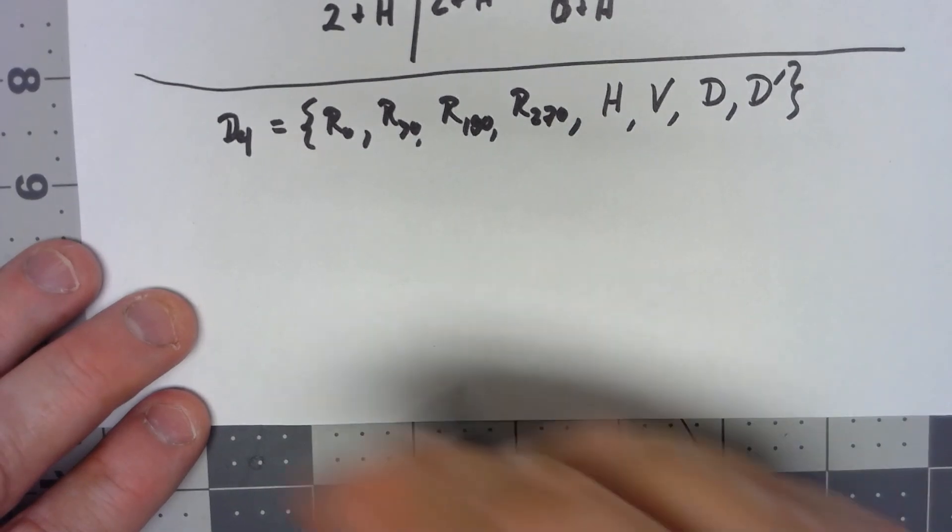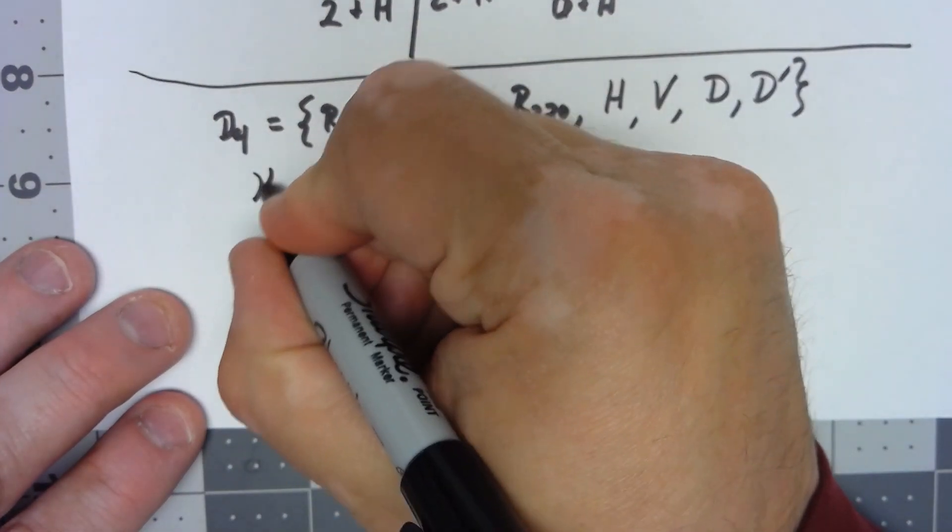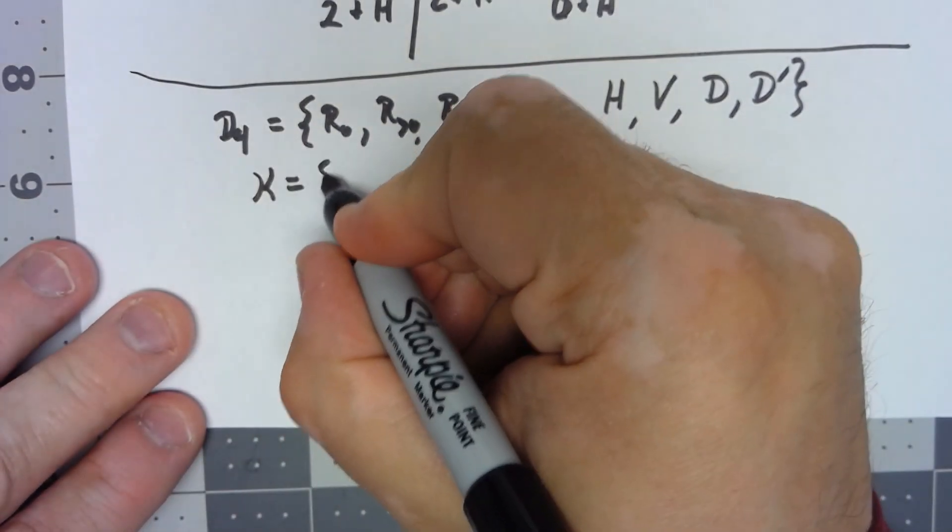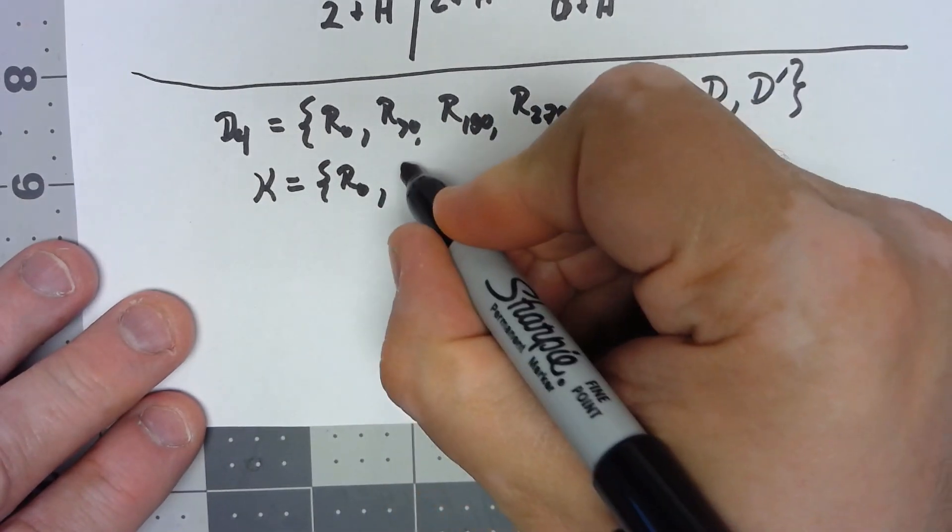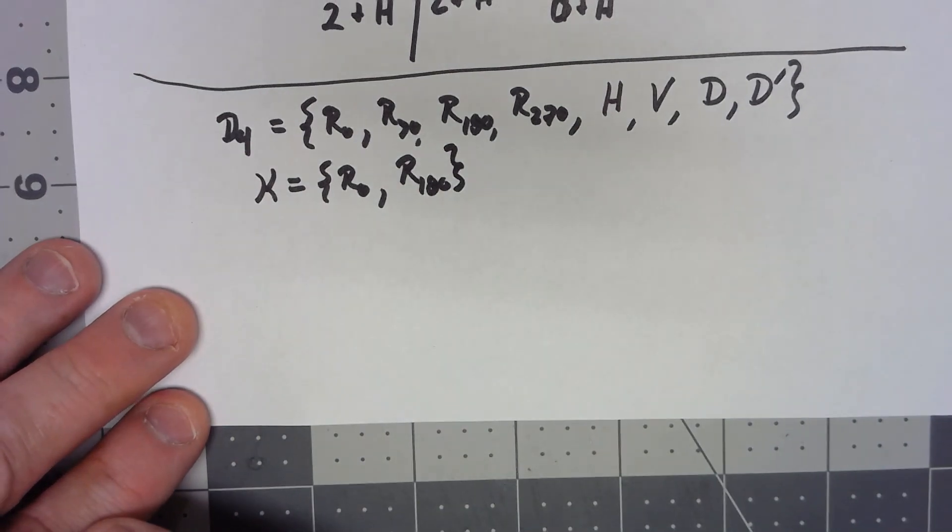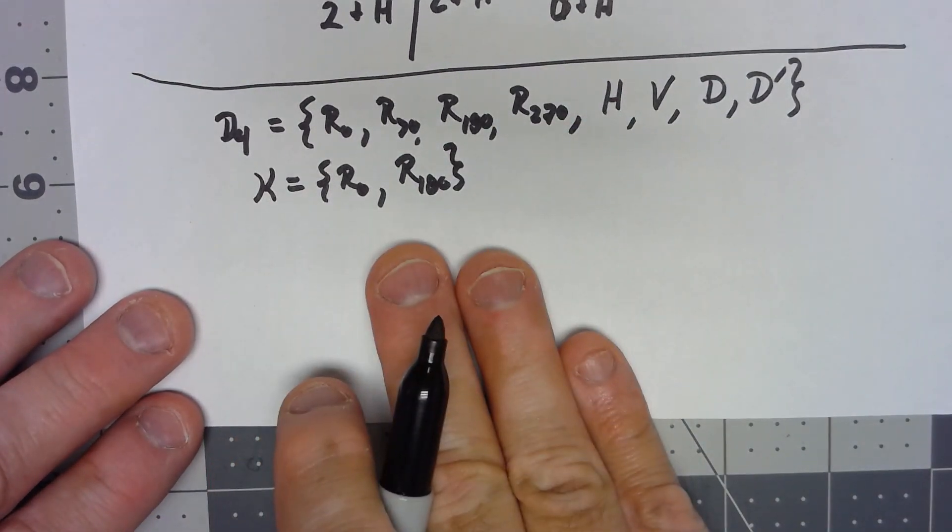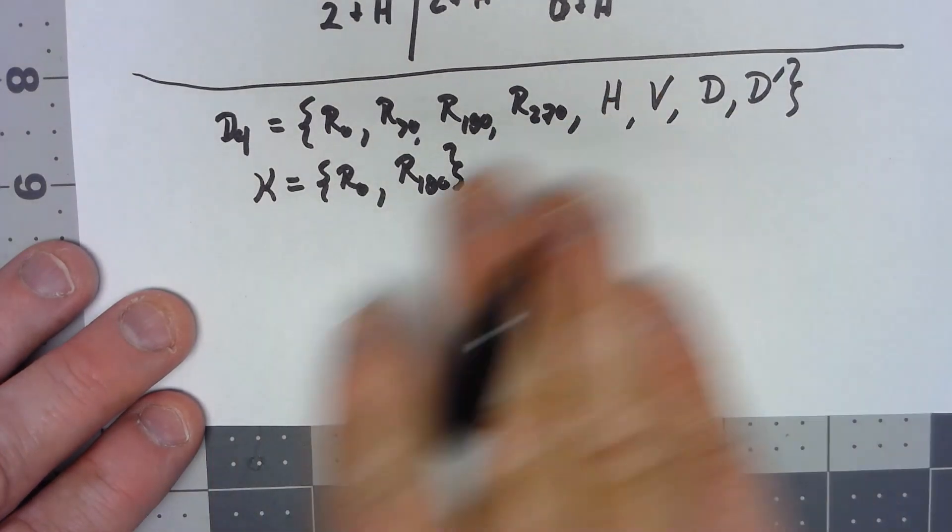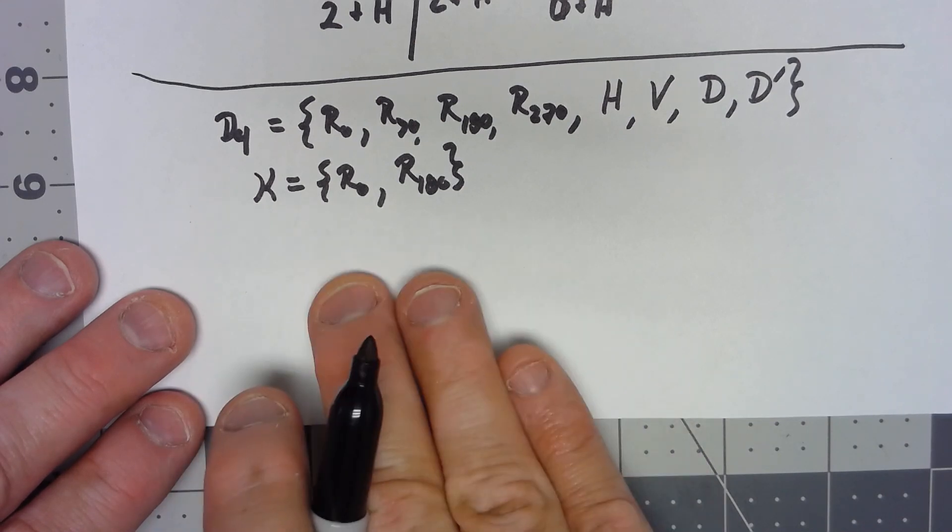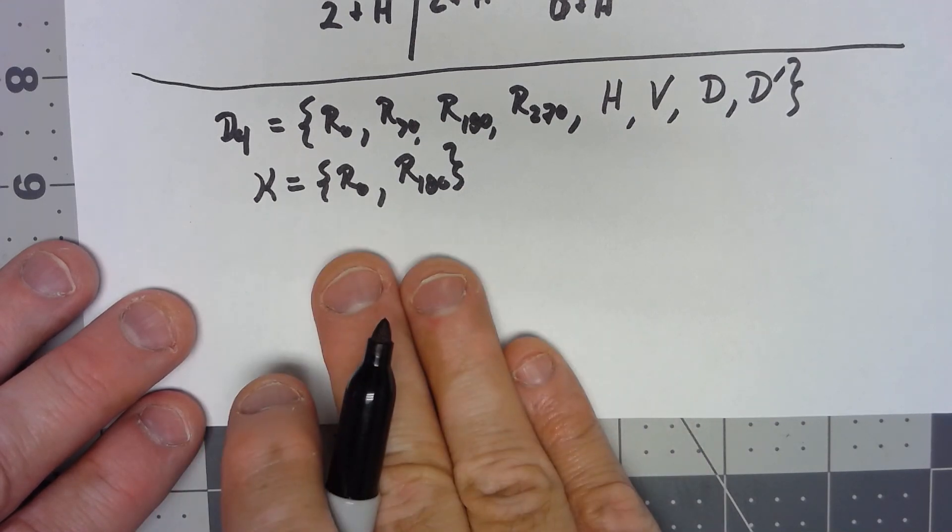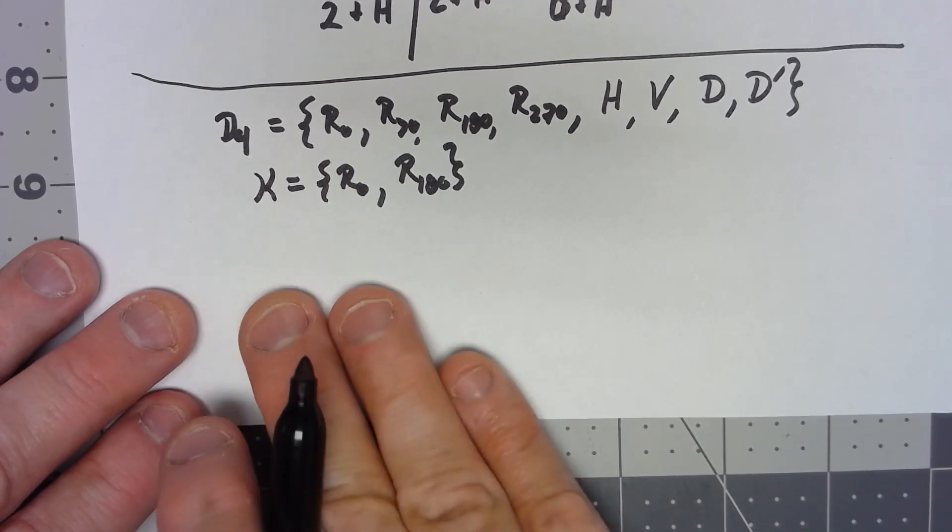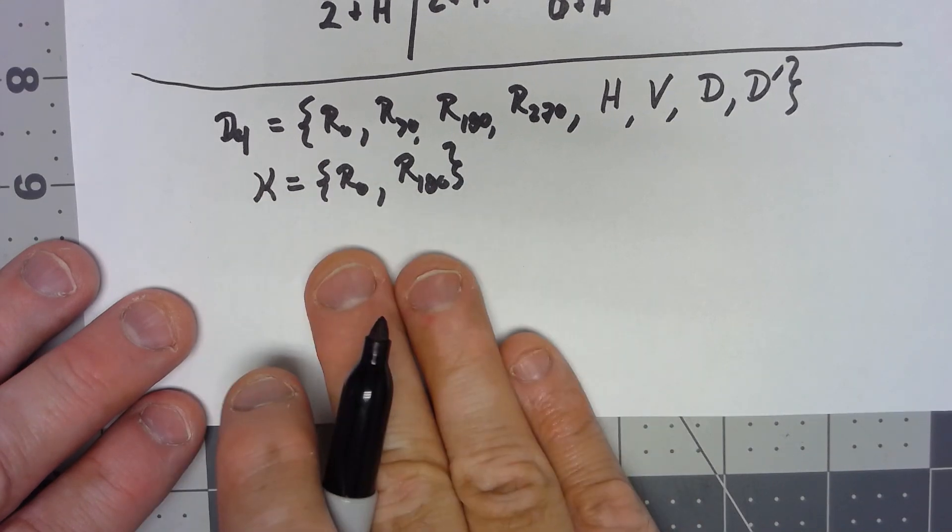I want to look at a subgroup, we'll call it K, and K will be the subgroup consisting of, it obviously has to have the identity R0, and we'll just go ahead and put R180 in there. I didn't prove this, but it's in the book. Anytime you have a dihedral group and you take a subgroup that is entirely rotations, that's always going to be a normal subgroup. So let's just start by thinking about what are my cosets for this.